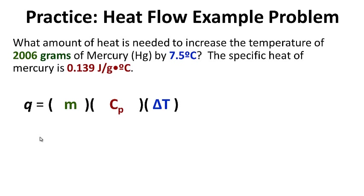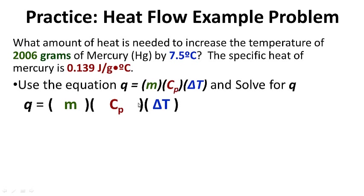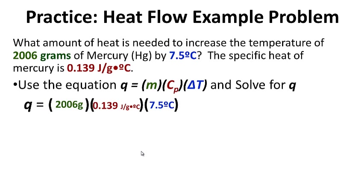Let's start thinking about what we know. We know our equation. We know the specific heat of mercury — 0.139 — which is a constant for this substance and will never change. We want to raise its temperature by 7.5 degrees Celsius, and the mass of mercury is 2,006 grams. Solving for Q, we need to add 2,091 joules of energy into our sample of mercury to raise its temperature by 7.5 degrees. Hopefully you got that right.